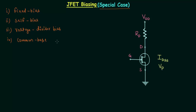So these are the four biasing schemes we have already completed, and we obtained the operating point in all four cases. If you remember, we followed a mathematical as well as graphical approach in the case of fixed bias configuration, and also mathematical and graphical approach in the case of self-bias configuration.